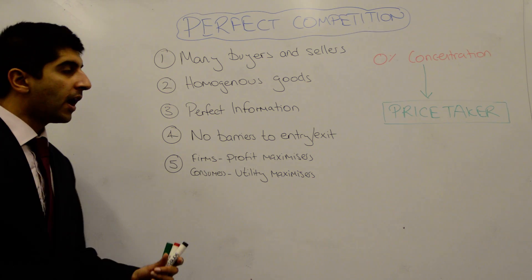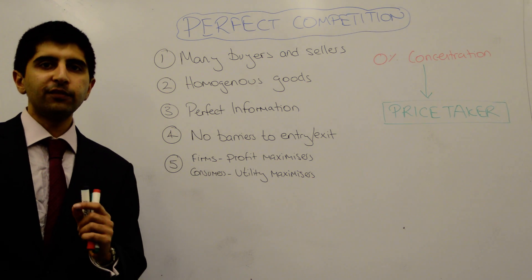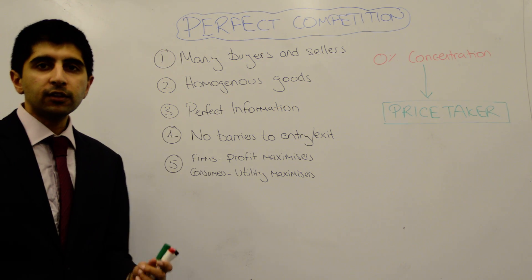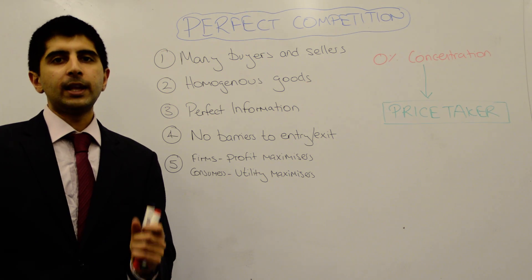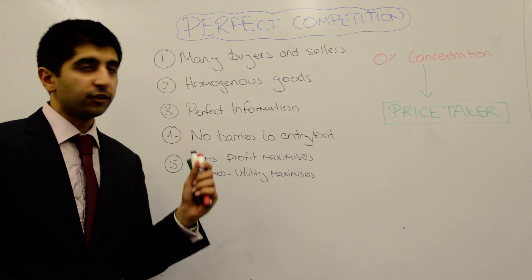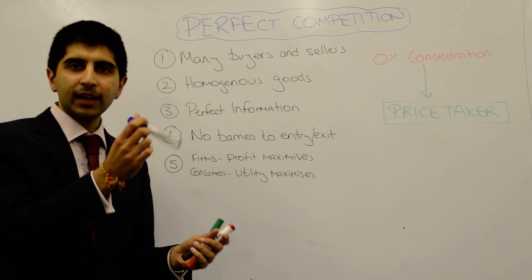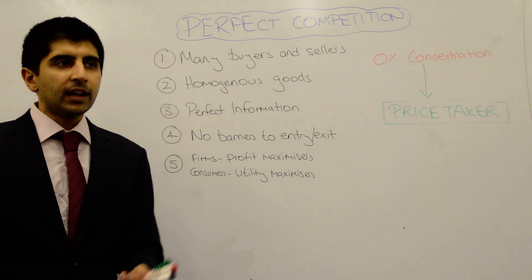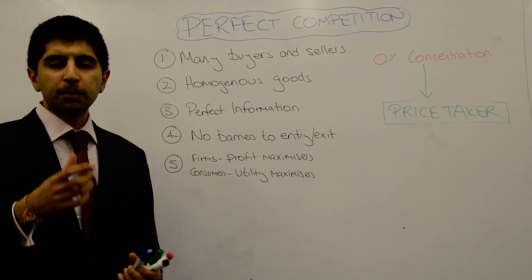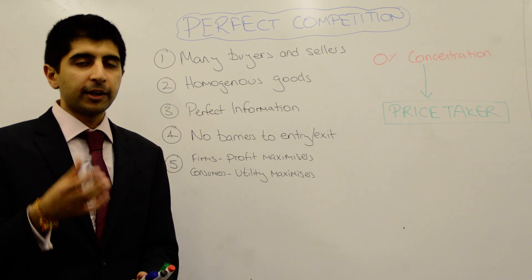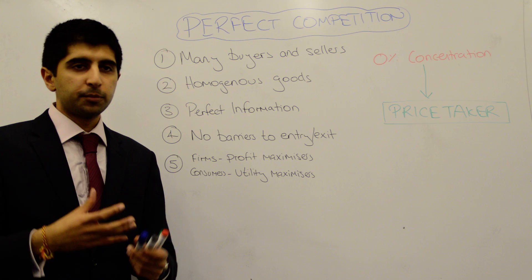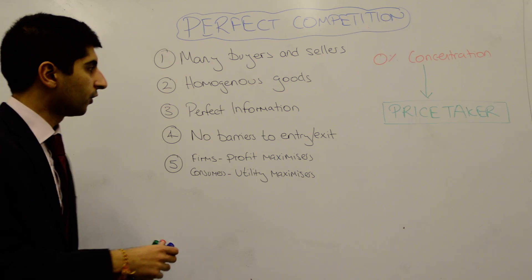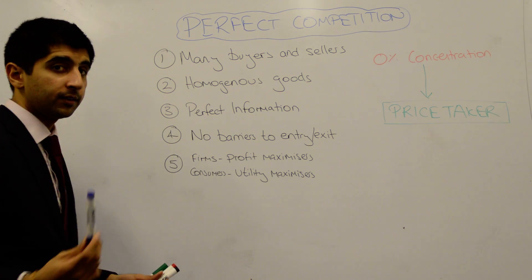We also assume that there's perfect information for both buyers and sellers. So if the price changes, straight away the buyers know exactly that the price has changed, and they know to change their consumption to somebody else. Similarly, for sellers, they have got perfect information about the costs of specific firms, the technologies of other firms, etc.